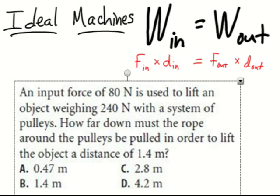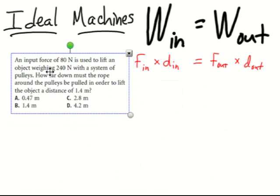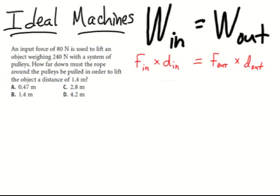When we solve this problem, we are going to use our equation, and we have to recognize that it is an ideal machine, which means no heat transfer will happen due to friction. So let's plug in our numbers into the equation, starting with force. There's an input force on the pulleys of 80 newtons, and the output force onto the object is 240 newtons. What this tells us is that there's got to be a greater amount of distance on the left side of the equation.